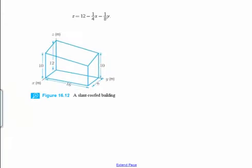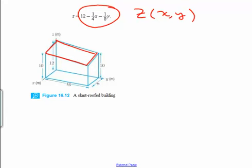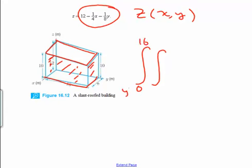We've got an equation for z in terms of x and y — z as a function of x and y — and here is the graph; it creates this slanted roof. Our x values go from 0 to 8, and our y values go from 0 to 16. To find the volume inside this slanted roof house, let's have our outer integral be y — our y values go from 0 to 16, our x values go from 0 to 8 — and then we integrate z. dx dy.